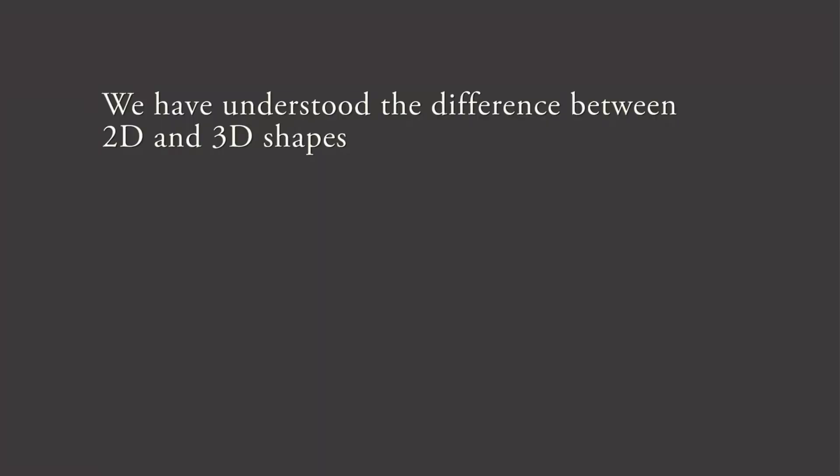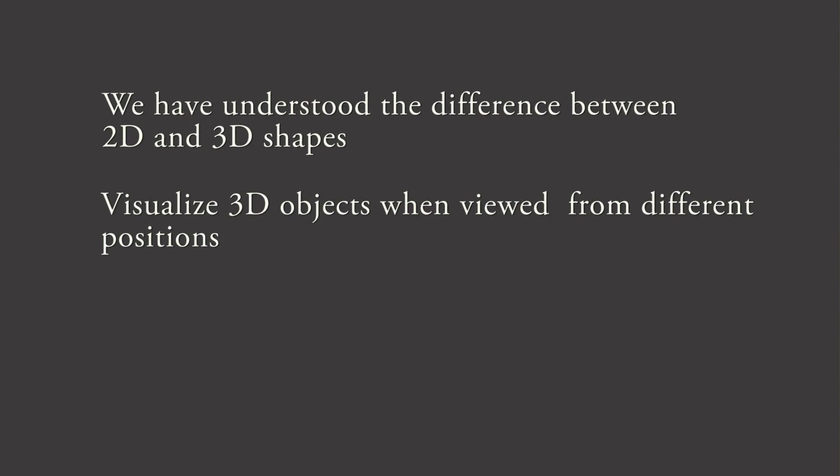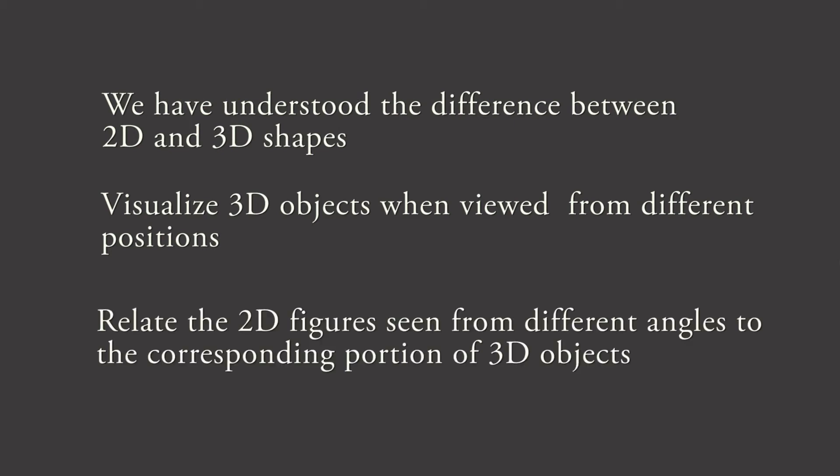Before we conclude this lesson, let us try to recapitulate what we have learnt today. We have understood the difference between 2D and 3D shapes. Also, we tried to visualize 3D objects when viewed from different positions, and related the 2D figures seen from different angles to the corresponding portion of the 3D objects.